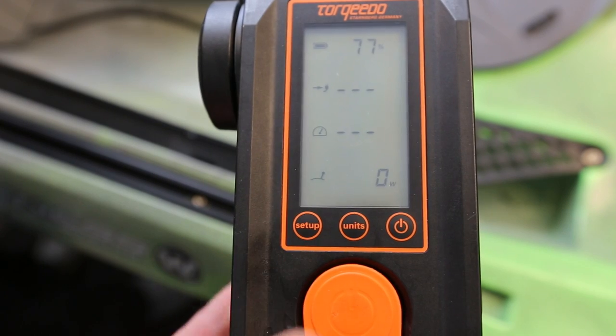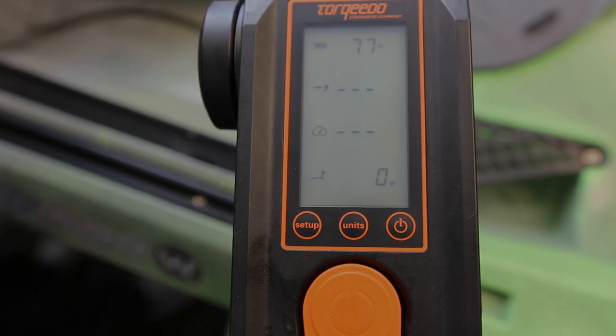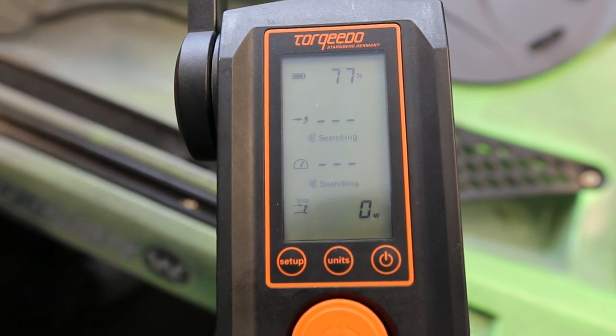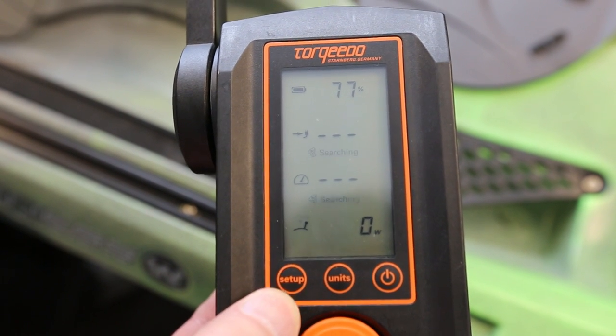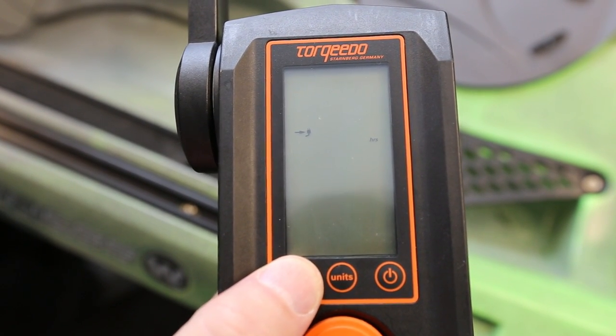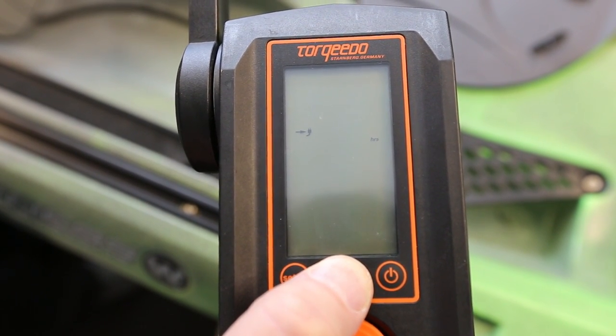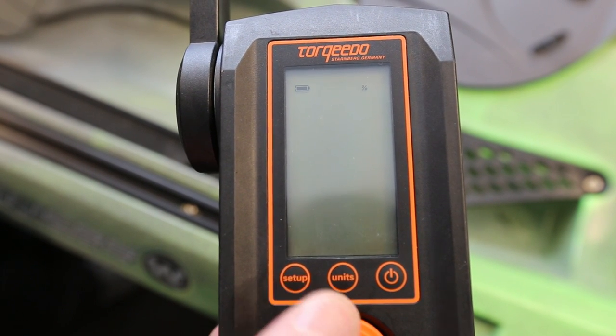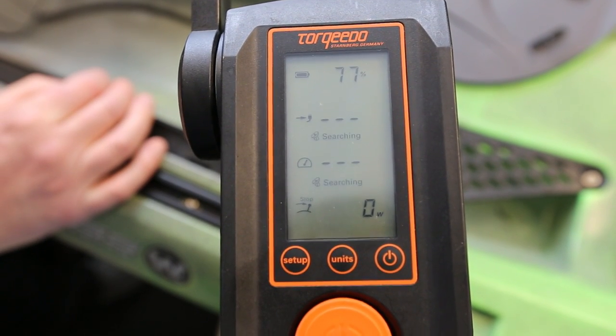You then enter the speed indicator setting. You choose between kilometers per hour, miles per hour, and knots. The selection is made by pressing the middle button. You confirm your selection and leave the Setup menu by pressing the Setup button again.